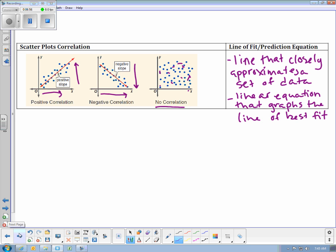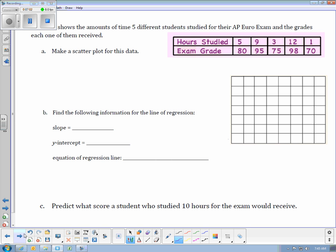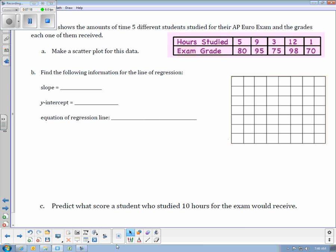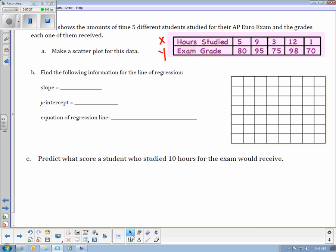All right, so let's take a look at our next example. In our next example, now we're looking at the table that shows the amounts of time five different students studied for their AP Euro exam and the grades that they got. So the first thing that we want to do is make a scatterplot of the data. So we have the table, and again, time is always my independent variable, so I'm going to make that my x and make that my y. This time the table is not labeled for us, so we're going to have to label it ourselves.